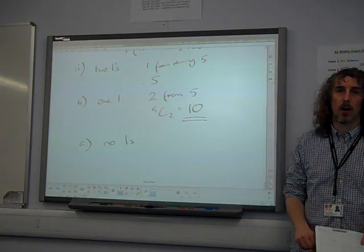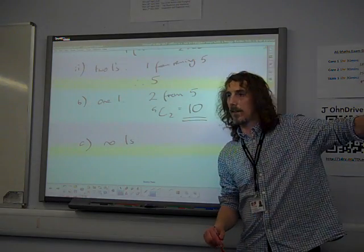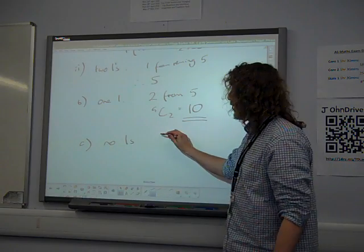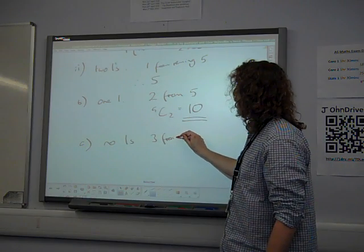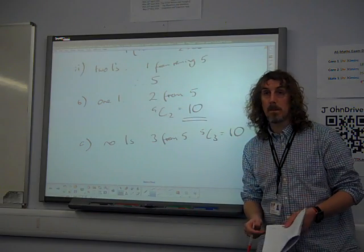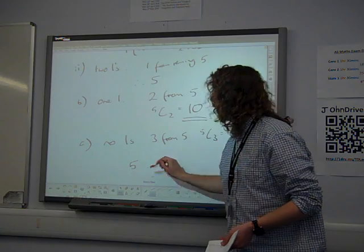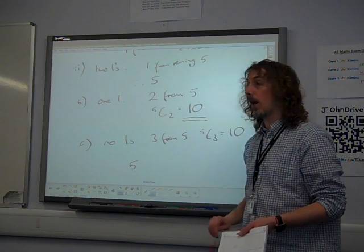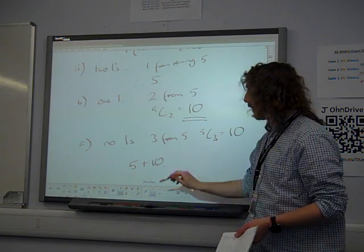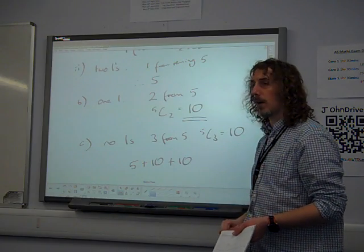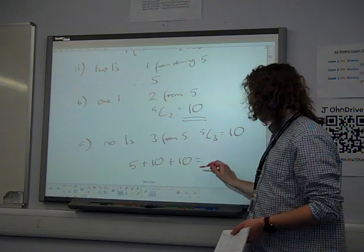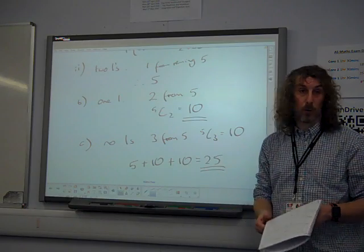Well, let's think through how many ways you could get no ones. We're rejecting the two ones completely, putting them on one side. We have five remaining numbers. We need three from five. Five C3 also gives us ten. So we've got five ways you could have two one selected. Ten ways you could have one one selected. Ten ways you could have no one selected. That's all the options.